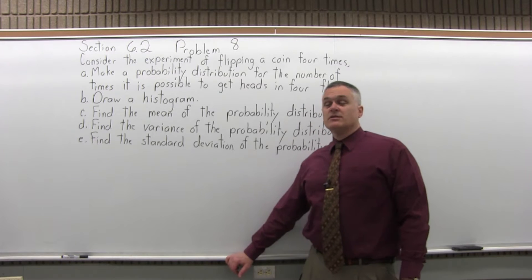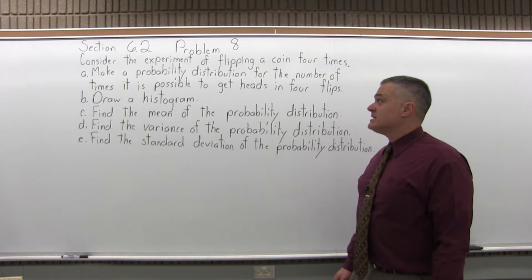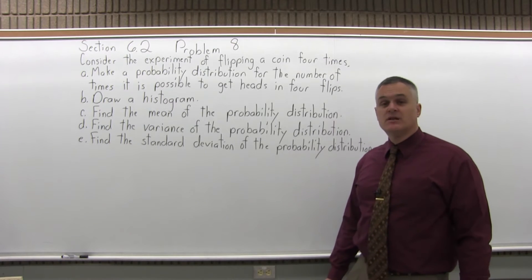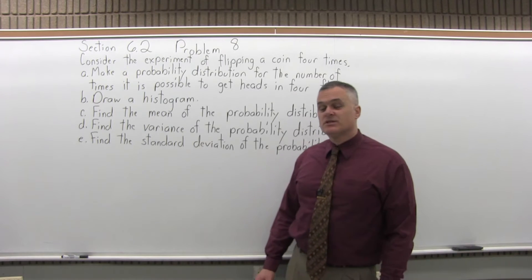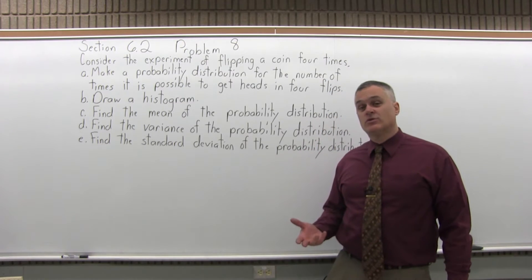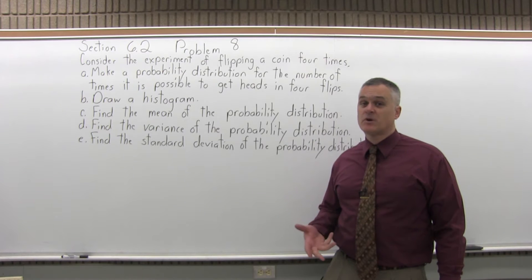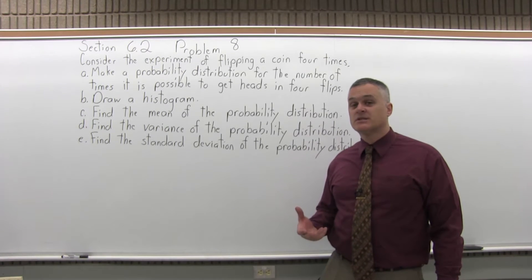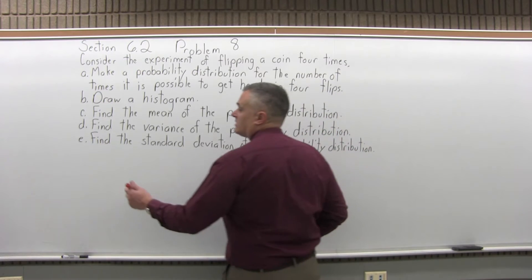It says, consider the experiment of flipping a coin four times. Part A says make a probability distribution for the number of times it's possible to get heads in four flips. A probability distribution, if you remember, is a chart with two columns. The first column lists every possible outcome of your experiment, and the second column lists the probabilities of those results in the first column.